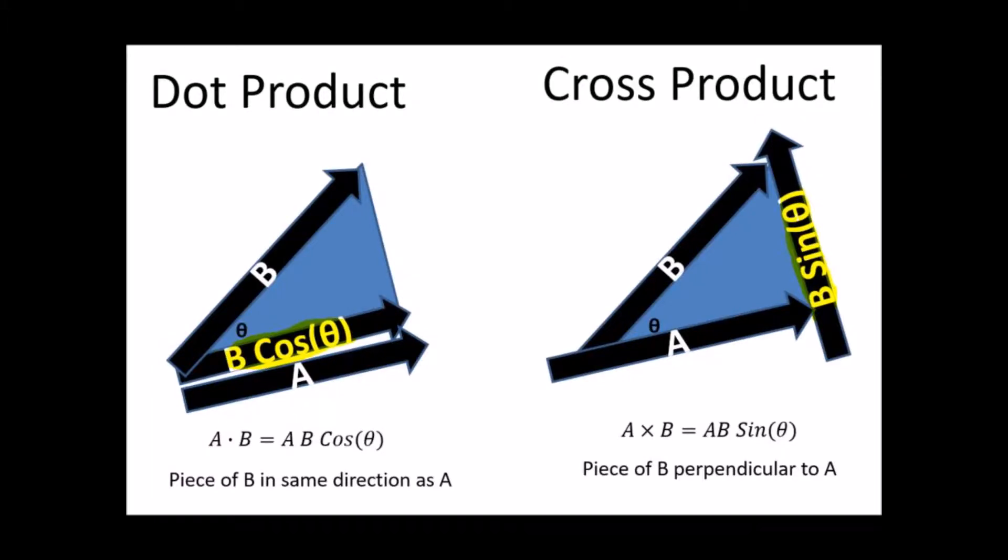Dot products and cross products. So we have two vectors, A and B. The dot product gives the piece of B that is in the same direction as A. The cross product gives the piece of B that is perpendicular to A.